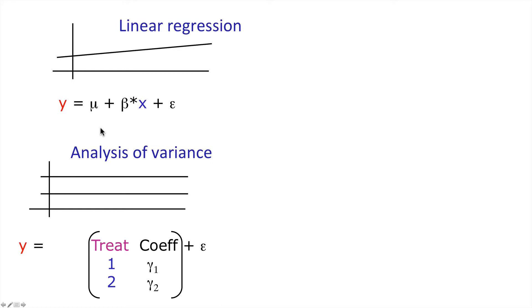We've also looked at a related technique where, instead of a continuous predictor, we've got a categorical predictor. Here we have one with two separate levels for that single categorical predictor. We wanted to know whether the size of a continuous response was in any way related to the levels of that categorical predictor. This is the analysis of variance model.